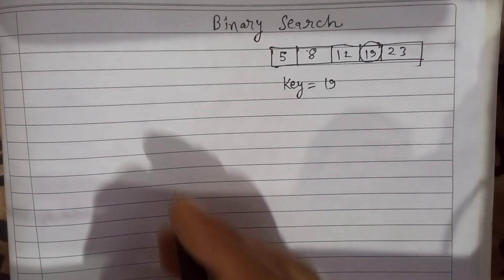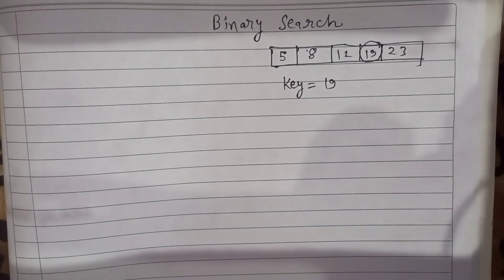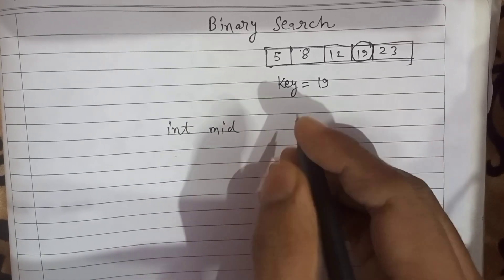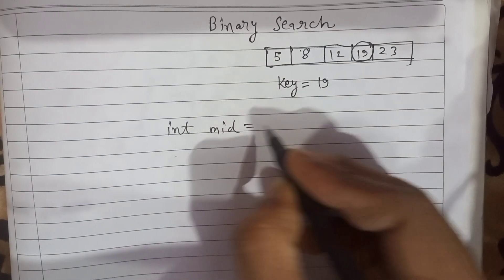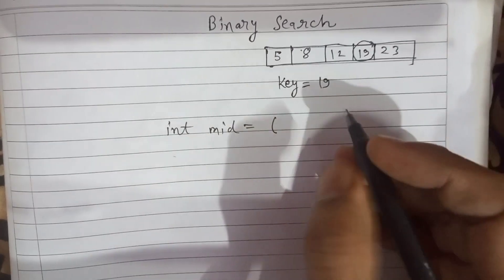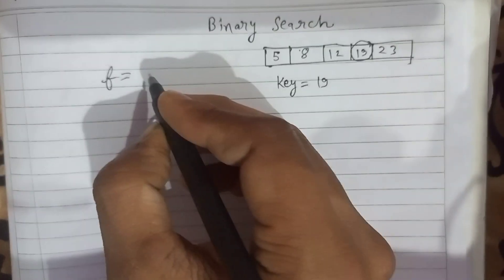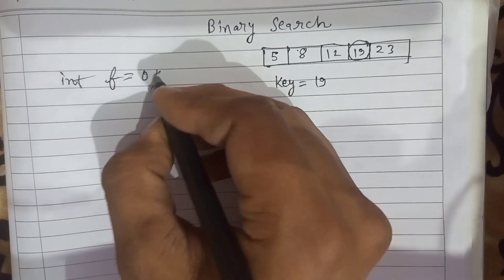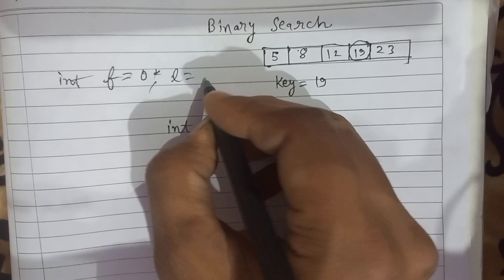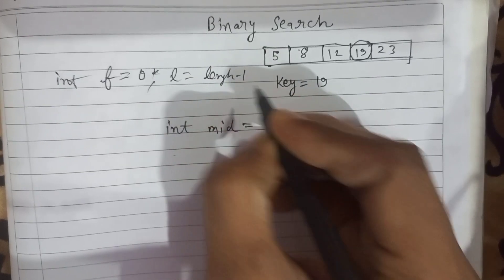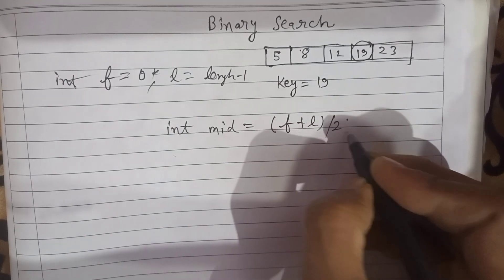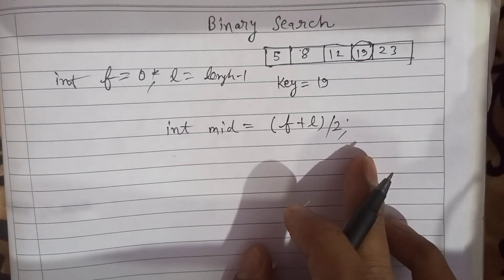To search, we will first look for the mid value. For mid value, we need the first position — we take f (first) as 0 — and the last value will be the array length minus 1. Then we add both and divide by 2, so in this way we get the mid value.